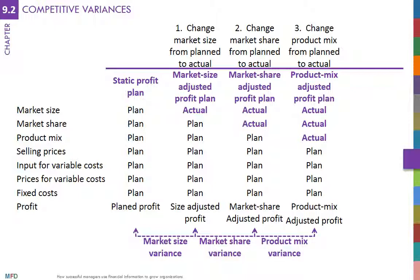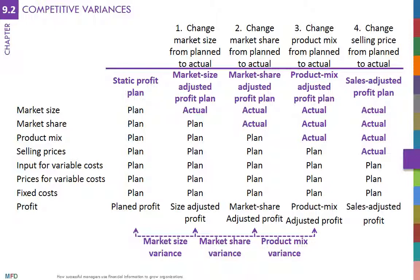The last variable is the selling price. To analyze the effect of selling prices on profits, we compare the last profit plan with a new profit plan where planned selling prices are switched to actual prices. Higher selling prices will lead to higher profits and lower prices to lower profits. This variance is the selling price variance. By now, we have changed all the revenue drivers from planned levels to actual levels. The latest profit plan has the actual revenues but all costs at planned levels, except for volume. This is the sales-adjusted profit plan.